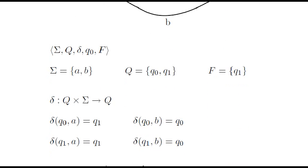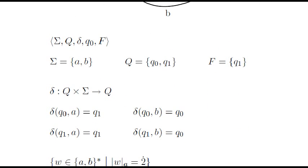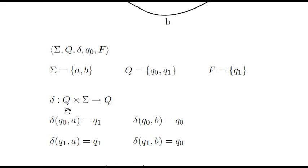The transition function is formally defined as a function that, given a pair state symbol, tells us in which state we end up after reading the symbol. In the case of q0 and an A, we go to q1. In a similar way, we consider the rest of the cases.